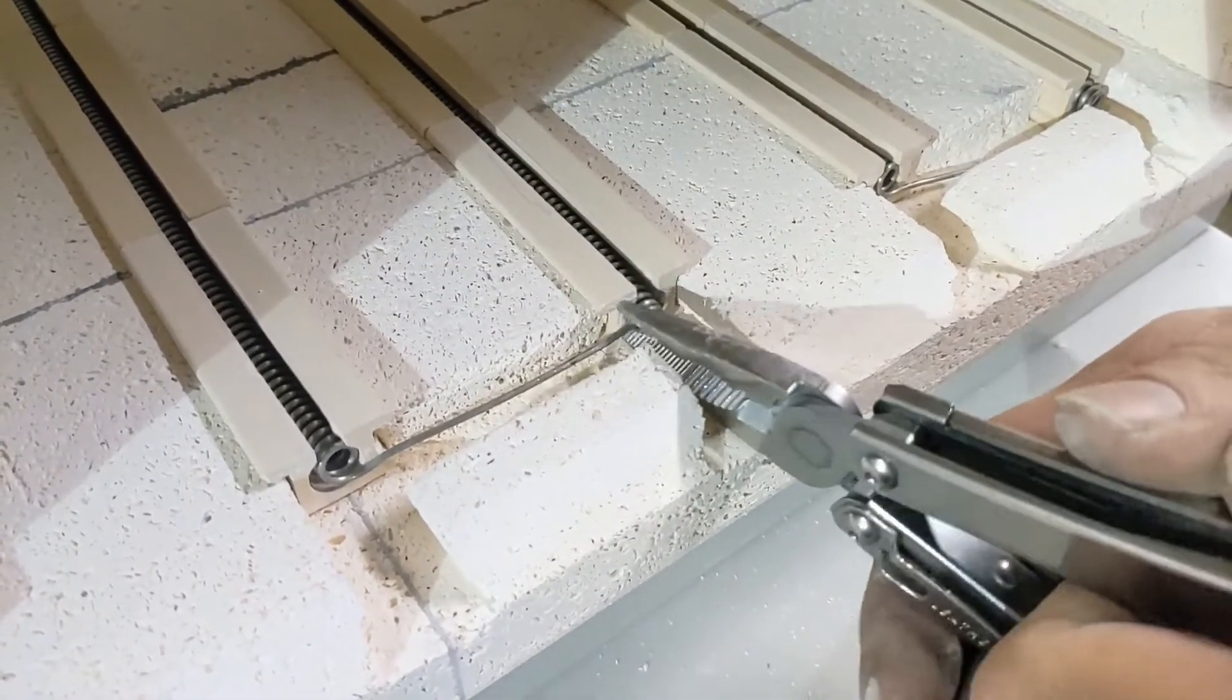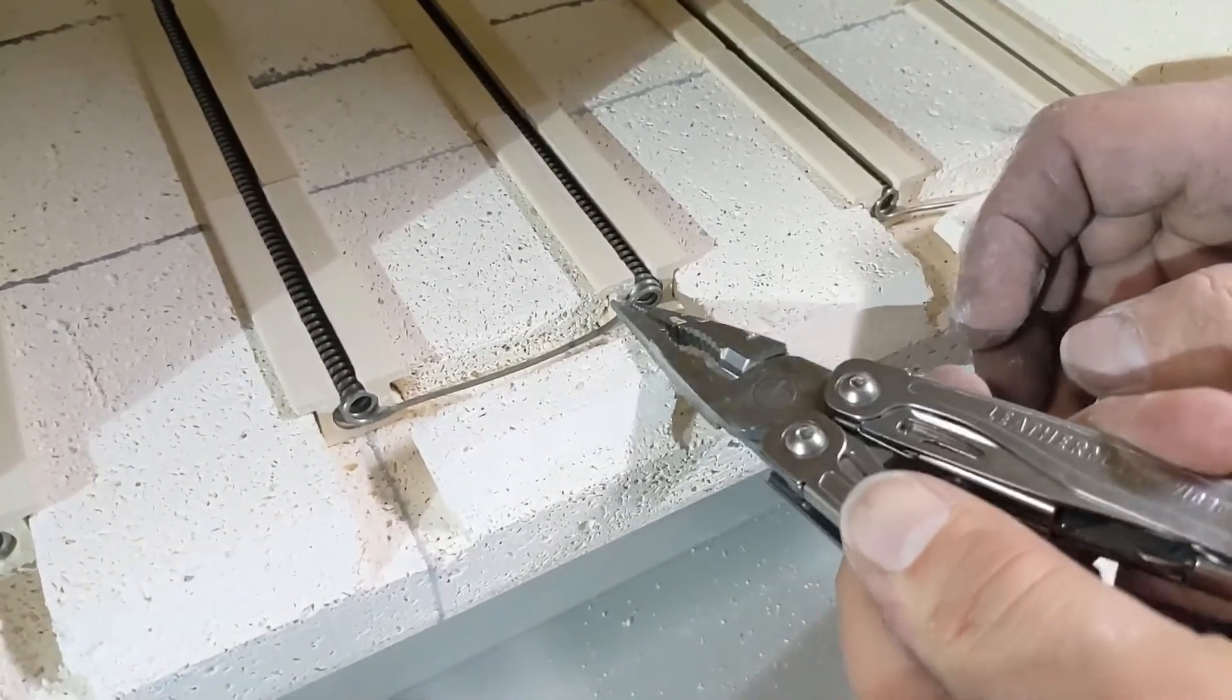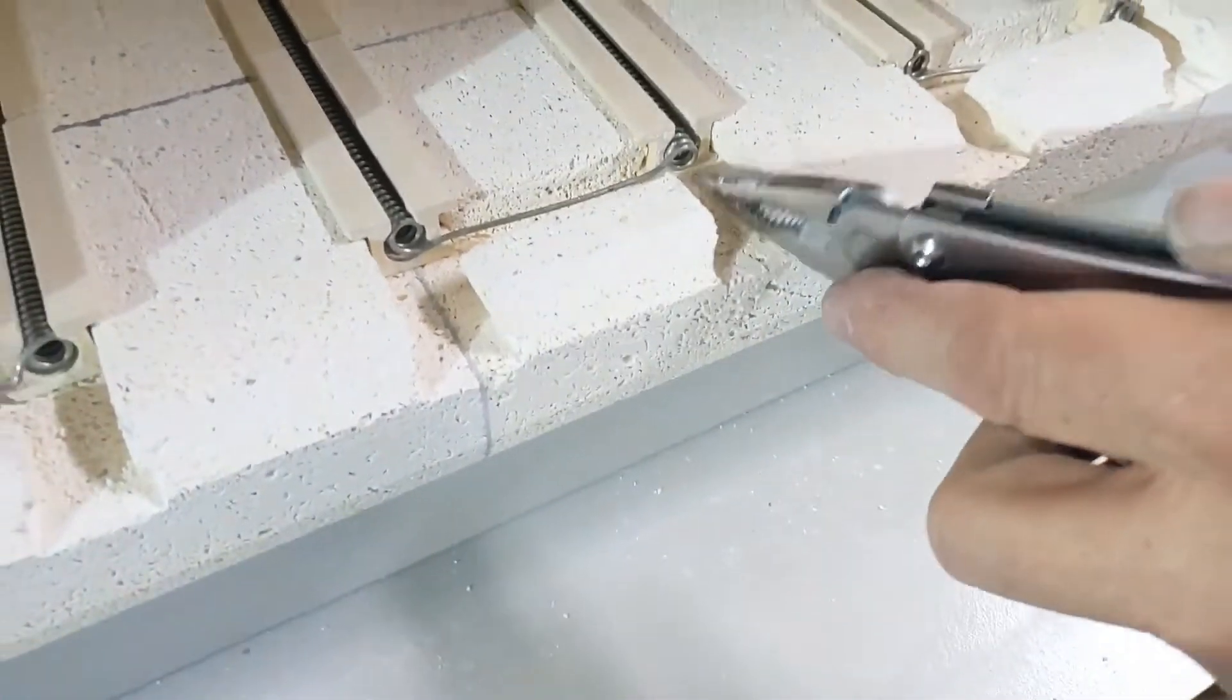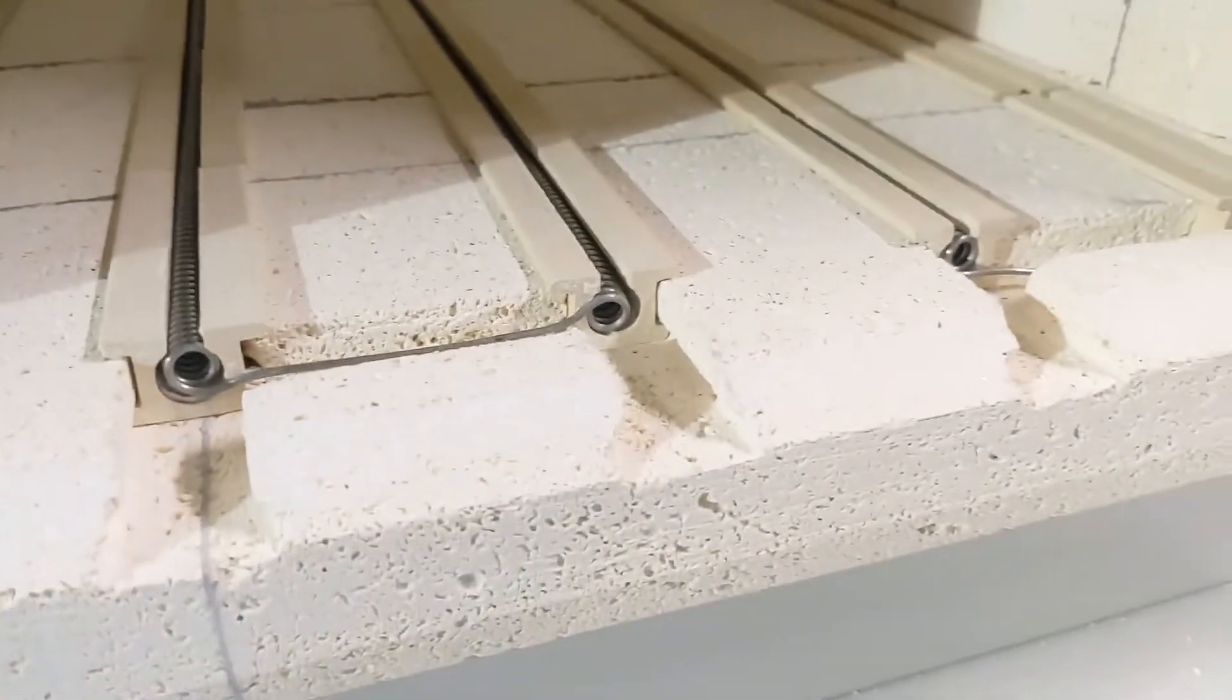Finally, with the needle nose pliers, bend down the center of the element so that it stays underneath the surface of the brick. This is done so that the element stays inside the brick when it expands while heating.